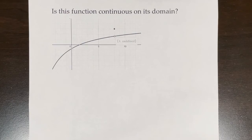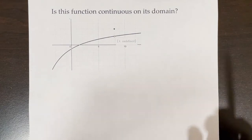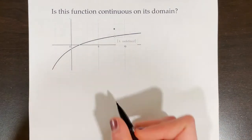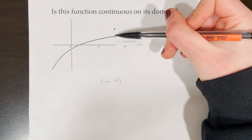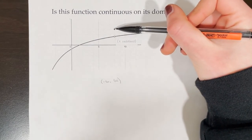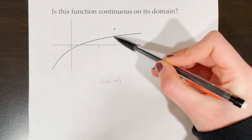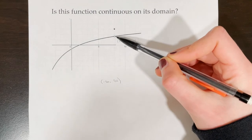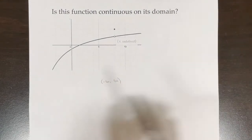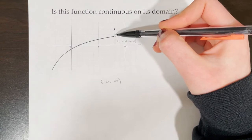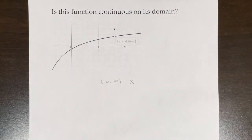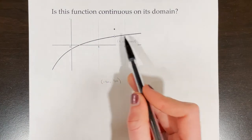Every function we've looked at so far has been continuous on its domain. Now let's look at an example where a function is not continuous on its domain. Here we have a rational function whose domain appears to be negative infinity to positive infinity — the function does have an actual value at x equals 8, but it jumps up there. At 7.9 and 7.99 the function is down here, but at exactly 8 it jumps up, then at 8.01 it goes back down. The domain is negative infinity to infinity, but we have a point discontinuity at x equals 8, so this function is not continuous on its domain.